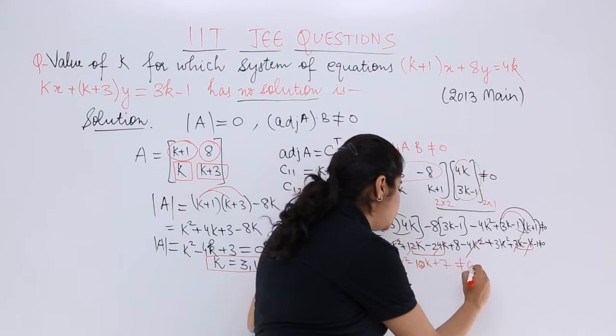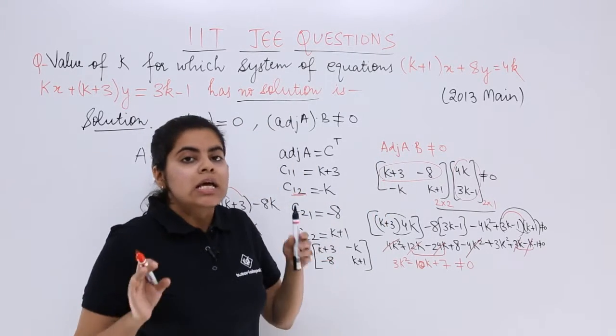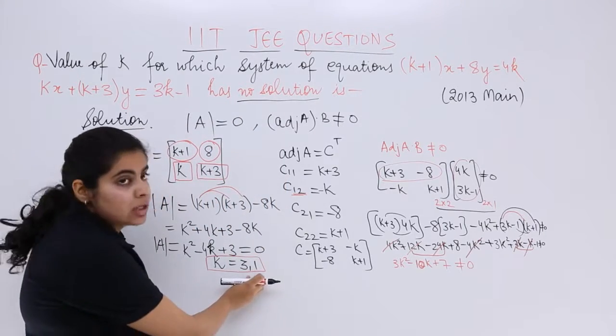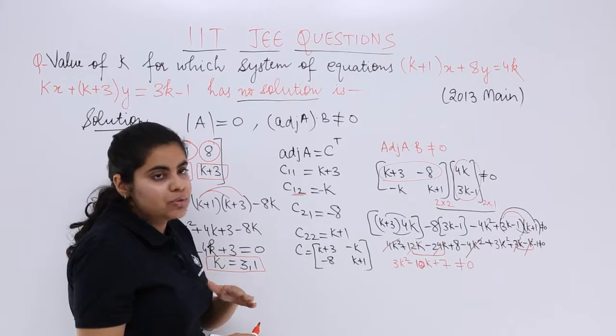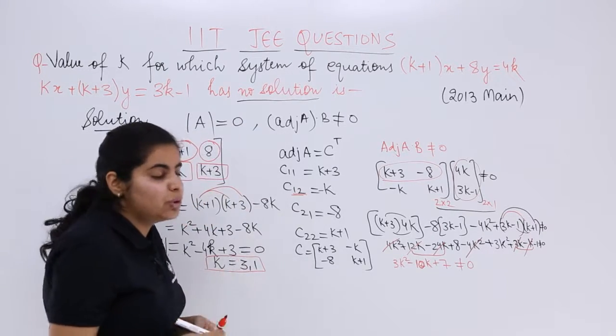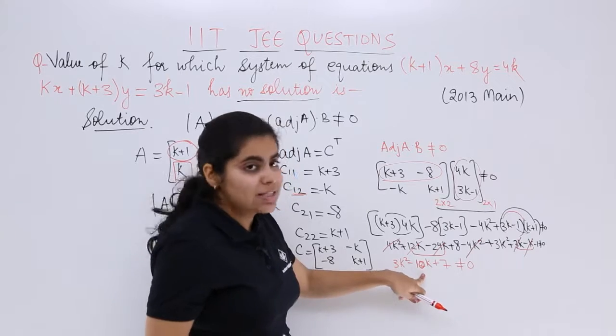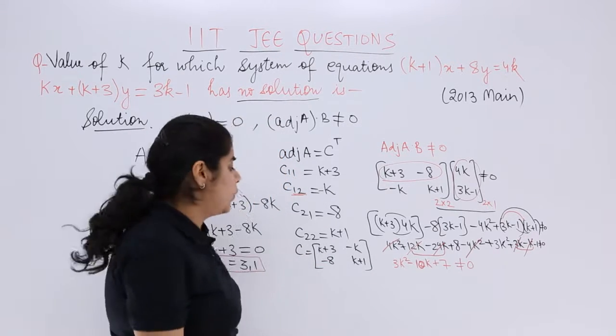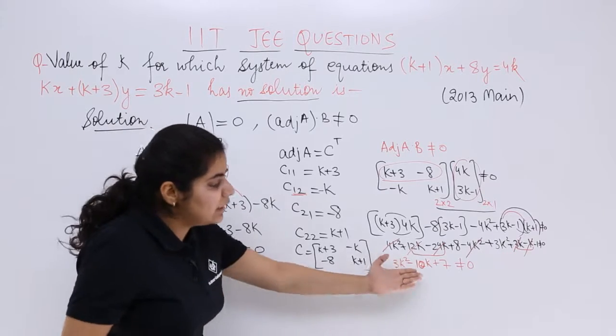Now see which value satisfies this condition. When I put k=3 and k=1, let me try k=1 first. 3 - 10 = -7. -7 + 7 = 0. Putting k=1 makes it 0, but I want not 0.